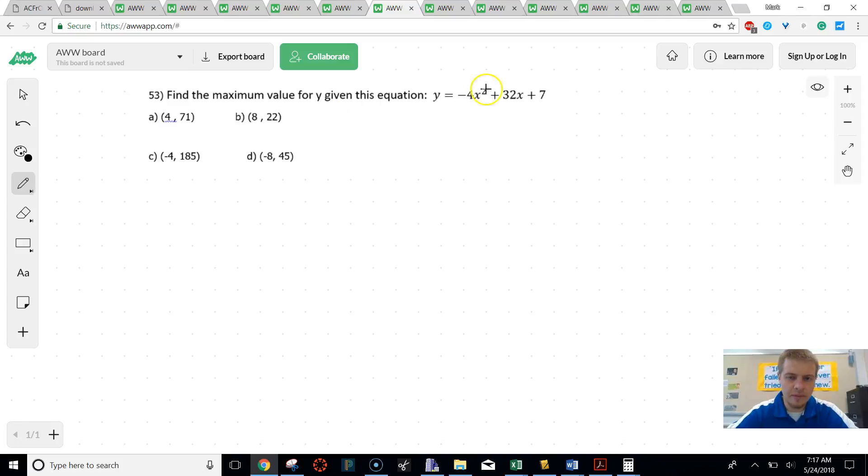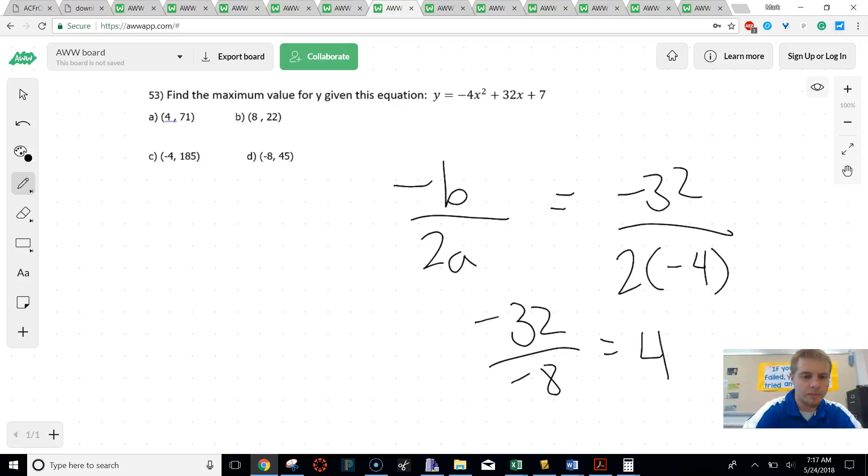So for this, it says find the max for this equation. If you remember, any time that we have to find the max, we need to do negative b over 2a, which means we're going to do negative 32 over 2 times negative 4, which is going to give us negative 32 over negative 8, which is going to divide down to be 4. And that is our x value, which means a is going to be our correct answer.